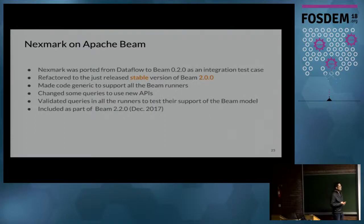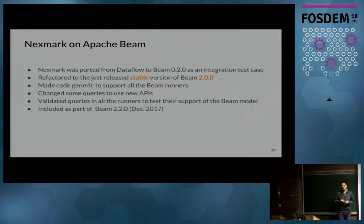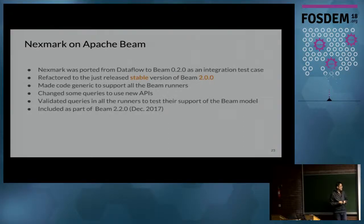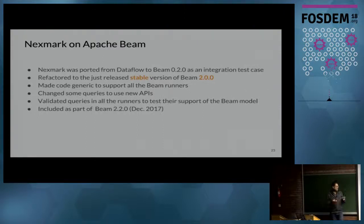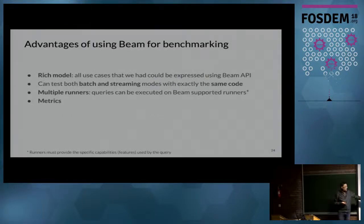So Nexmark in Apache Beam — the story: Google contributed it in version 0.2, then it was kind of abandoned when the original author left Google. Me and a colleague took it, refactored it, and brought it back with all the API changes, making it generic to run on every runner. We evolved some of the queries and finally got it merged in December of last year.